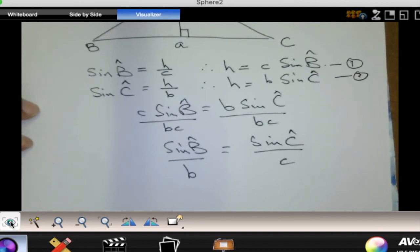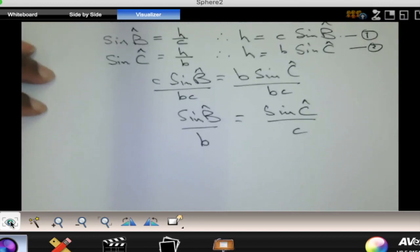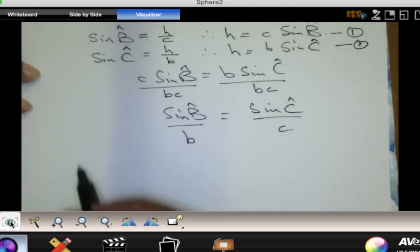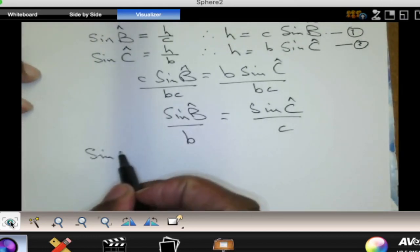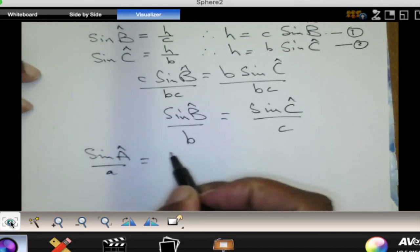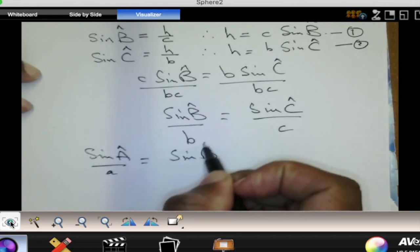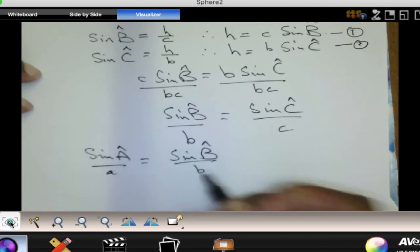And that is what we call the sine rule. So if you include angle A, you can actually show that sine of angle A divided by a is the same as sine of angle B divided by b.